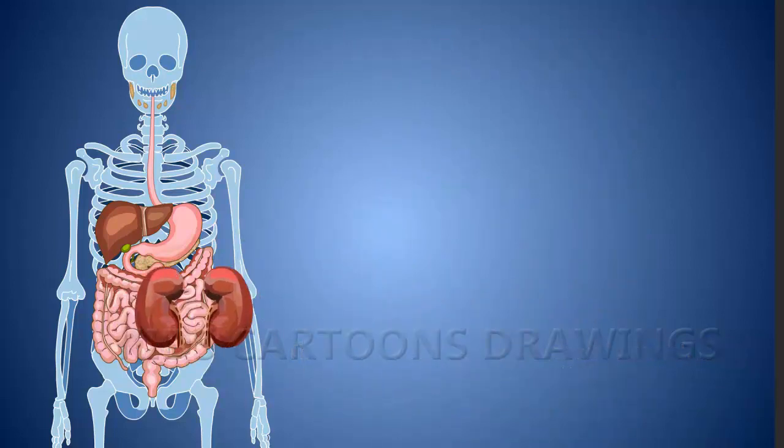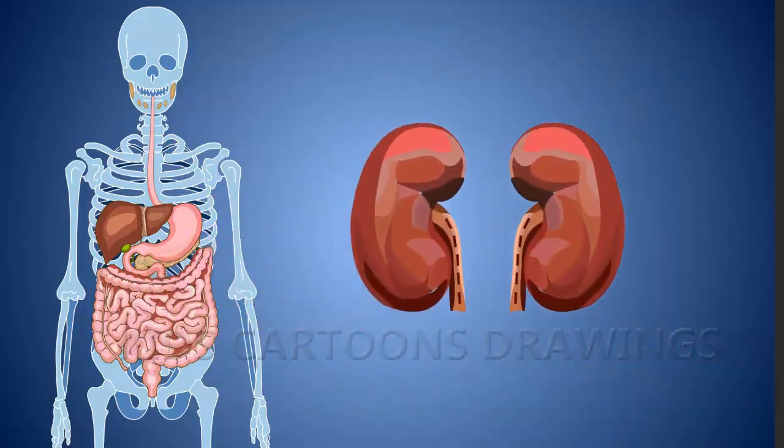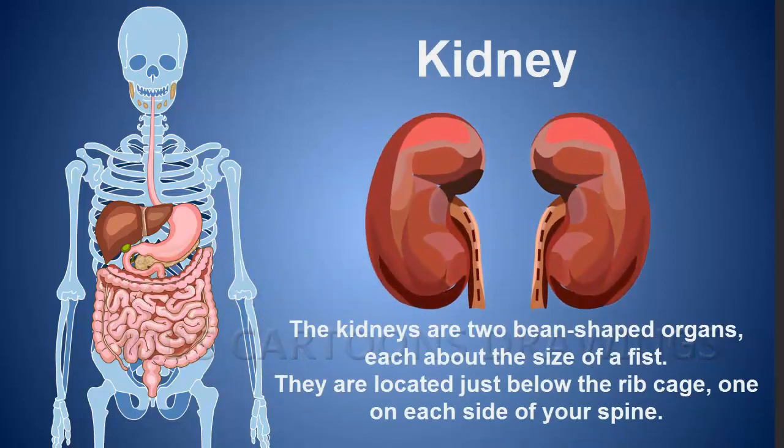Kidney: The kidneys are two bean-shaped organs, each about the size of a fist. They are located just below the ribcage, one on each side of your spine.